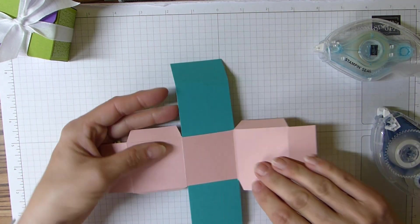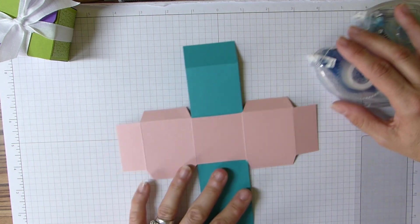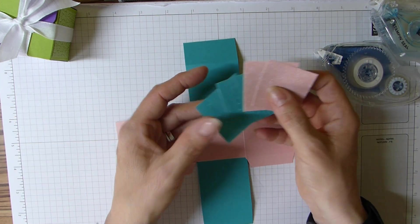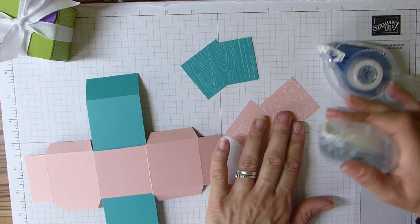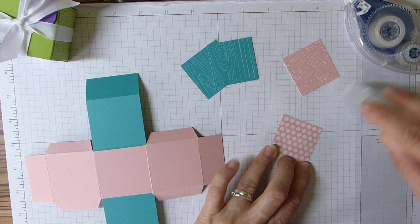Flip it over. You then want to add your DSP, and these are 1 and 3/4 by 1 and 3/4 inch squares, which is 4.5 by 4.5 centimeters.